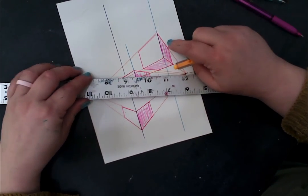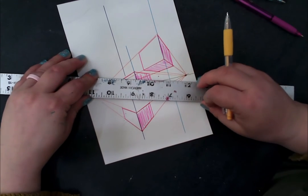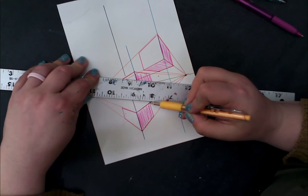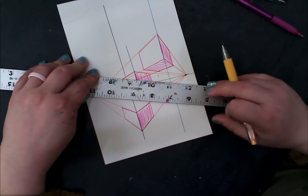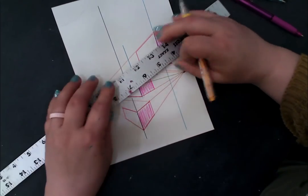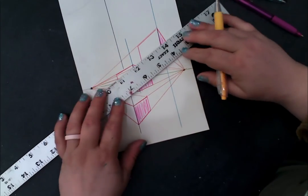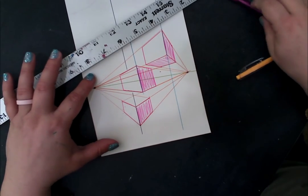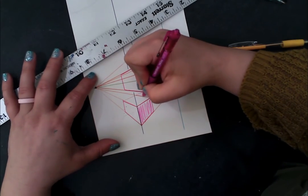I've got to use the opposite vanishing point for the top. For this corner that's on the right side of my vanishing point, I'm using my left vanishing point. For the left corner I'm using the right vanishing point. Now I'm going to take my pink pen to make it permanent.